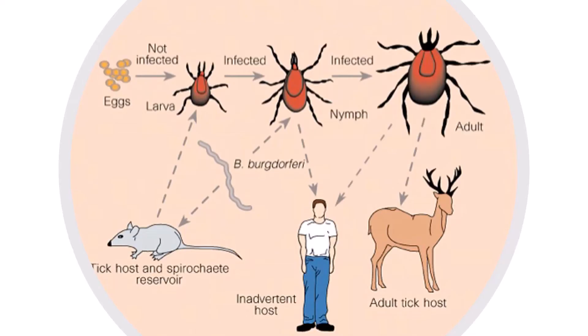Like all ticks, deer ticks only feed three times during their lives: once as a larva, once as a nymph, and once as an adult. Deer ticks may become infected as larvae by feeding on a small mammal or a ground-feeding bird that has the bacterium in their blood. Larvae will not feed again, so they do not pose any danger to humans. The larva then molts into a nymph the size of a poppy seed, which can spread Lyme disease to humans if it bites them. Most Lyme disease infections come from bites from nymphs because they are so small we rarely find them before they have time to feed on us for days.